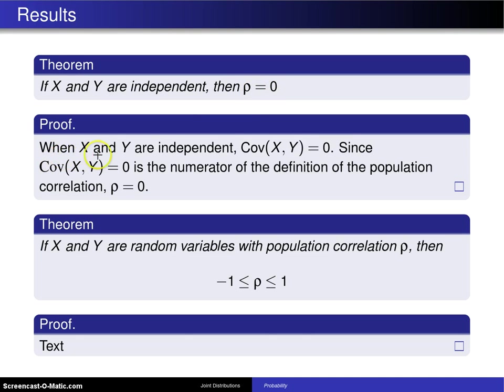Here's the proof. When X and Y are independent, the covariance is zero. Since the covariance is the numerator in the definition of the population correlation, rho is equal to zero.